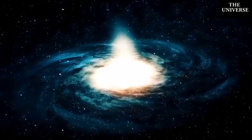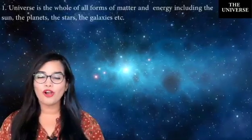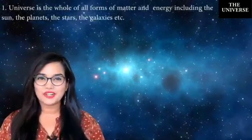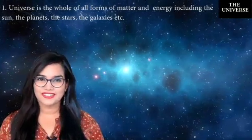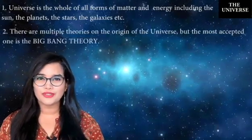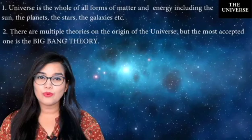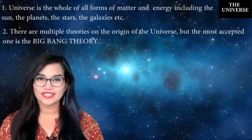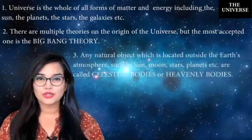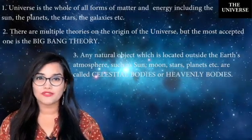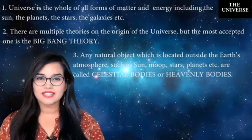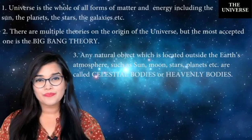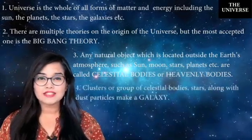Let's quickly summarize what we have learned. First, the universe is the whole of all forms of matter and energy, including the Sun, the planets, the stars, the galaxies, etc. Second, there are multiple theories on the origin of the universe, but the most accepted one is the Big Bang Theory. Third, any natural object located outside the Earth's atmosphere — such as the Sun, moon, stars, planets, etc. — is called a celestial body or heavenly body.